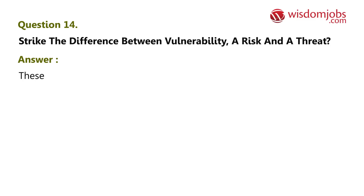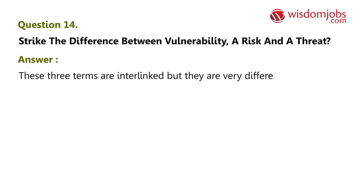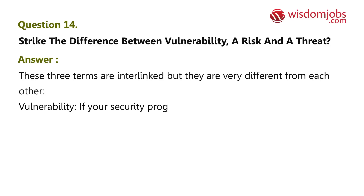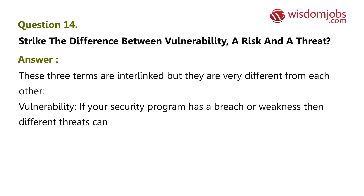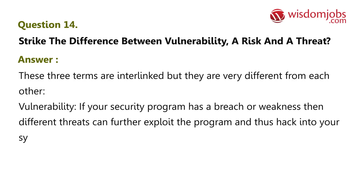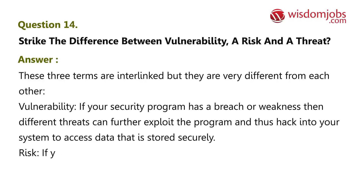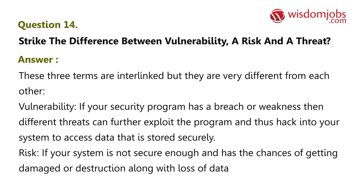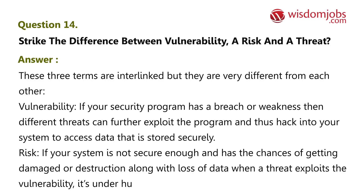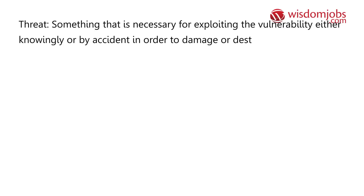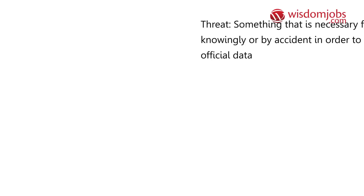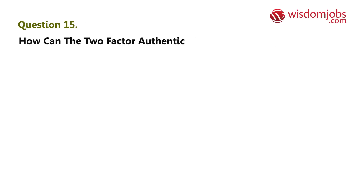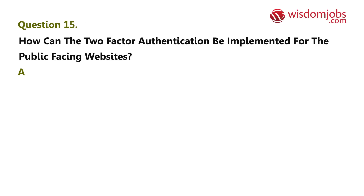Question fourteen: distinguish between vulnerability, risk, and threat. Answer: vulnerability — if your security program has a breach or weakness, different threats can further exploit the program and hack into your system to access securely stored data. Risk — if your system is not secure enough and has chances of damage, destruction, or data loss when a threat exploits the vulnerability. Threat — something necessary for exploiting the vulnerability, either knowingly or by accident, in order to damage or destroy personal and official data.